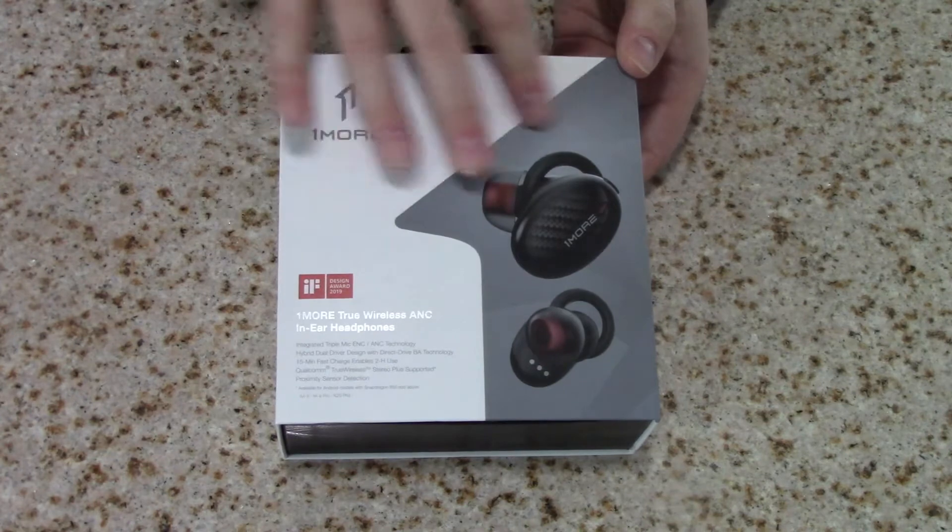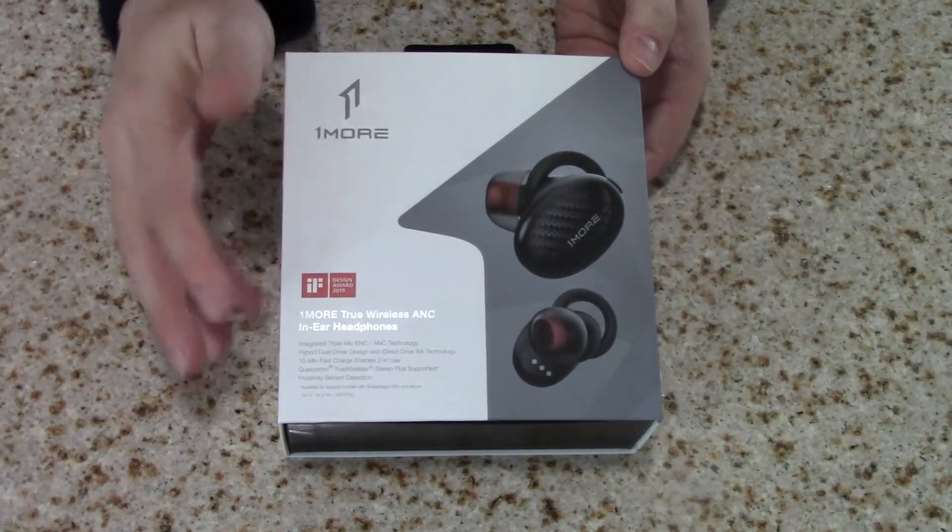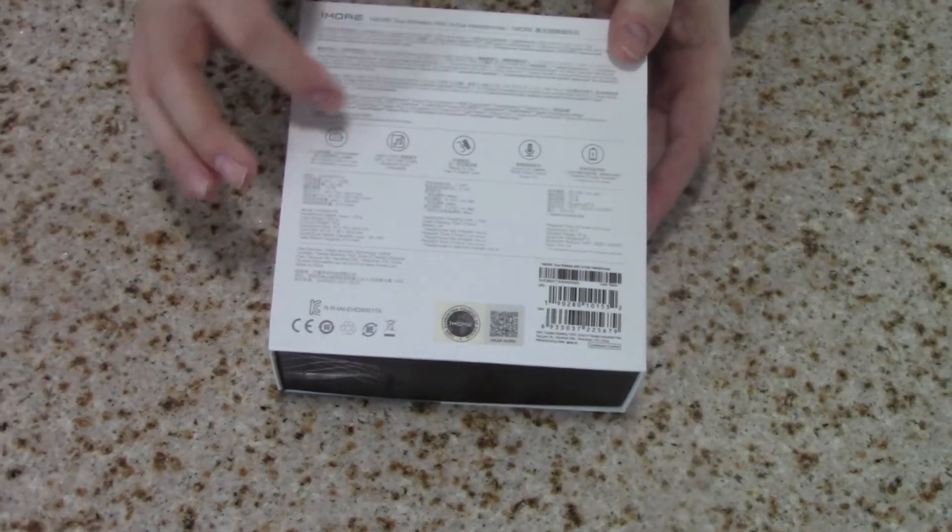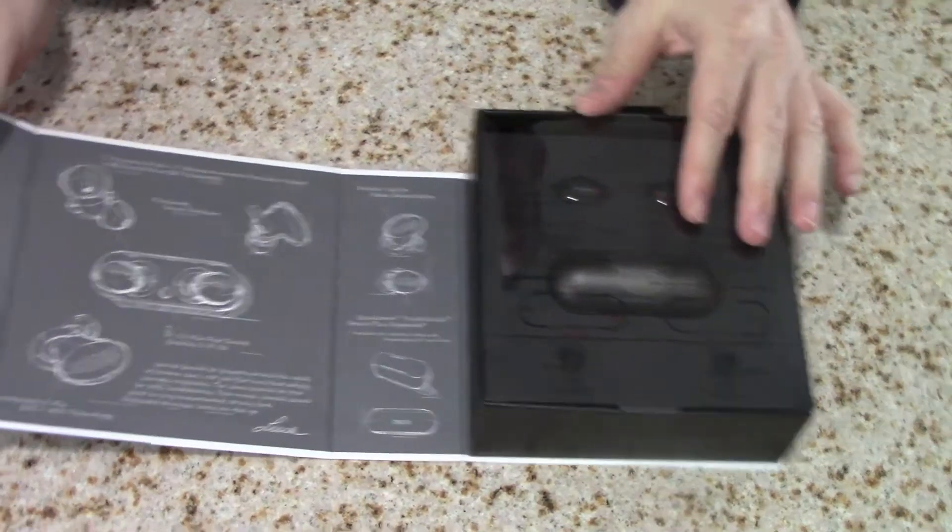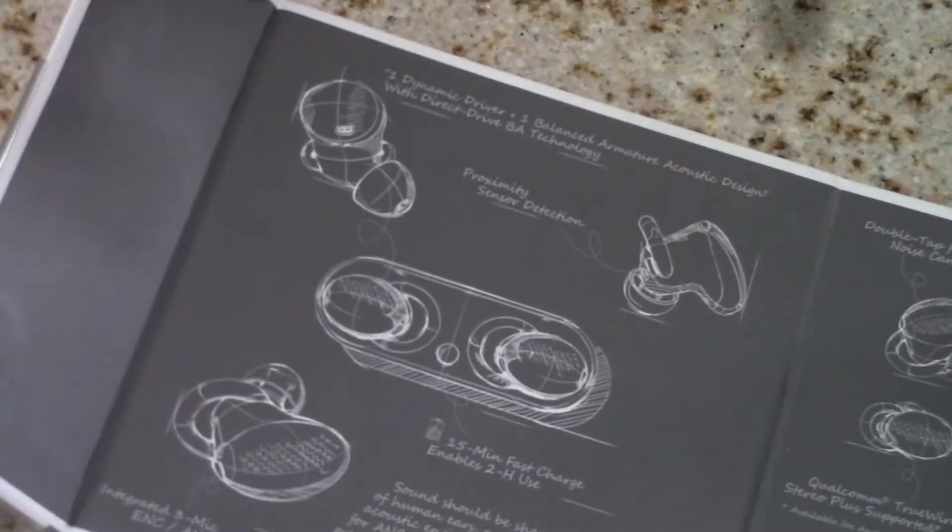You see on the box a nice color printed box with images of the in-ear monitor as well as their specs. Some of the specs here on the back. Open them up. Great looking box and you see it goes over some of the different specs and features that they have.